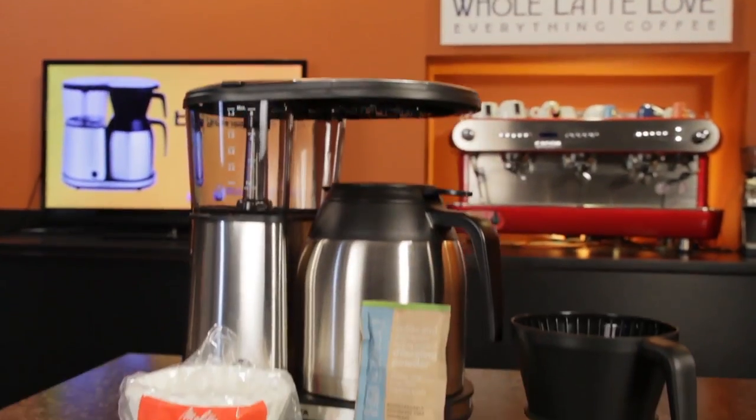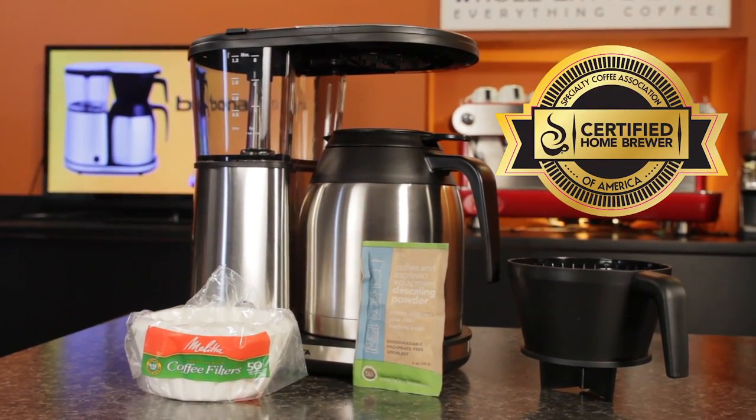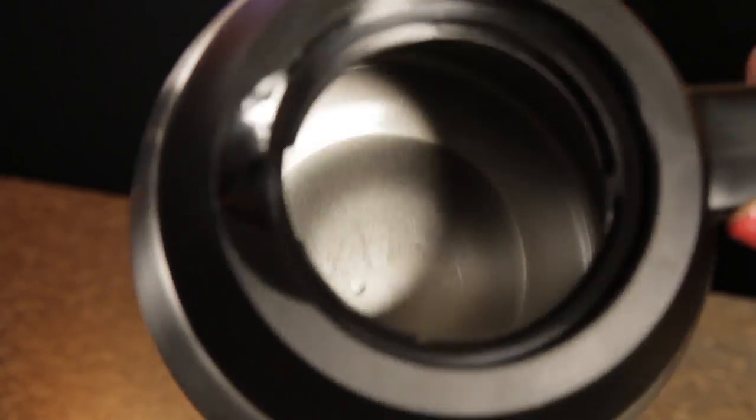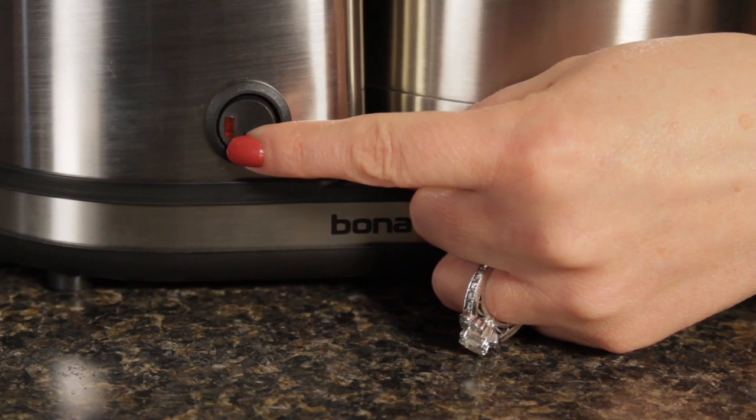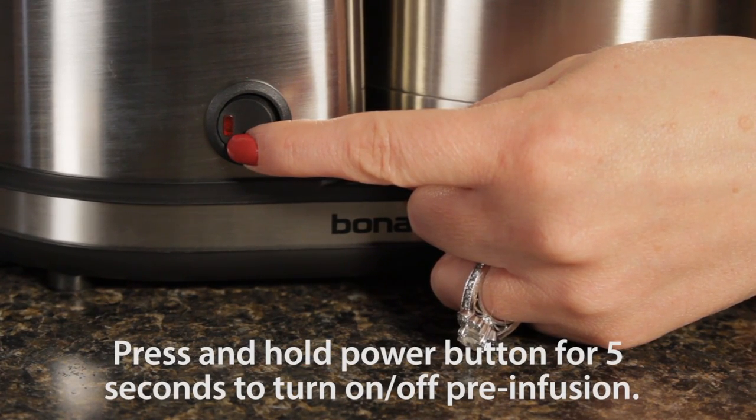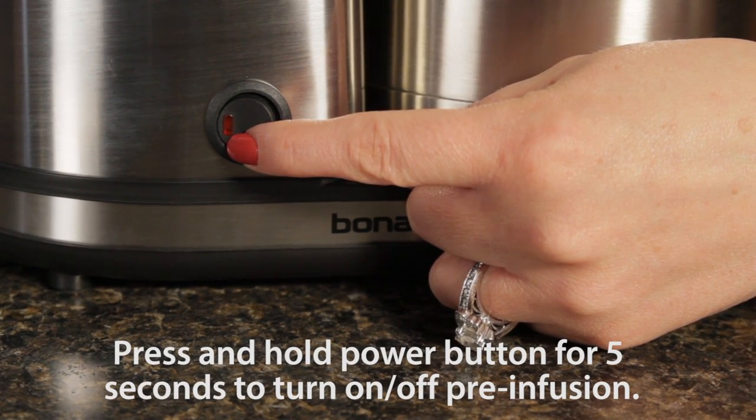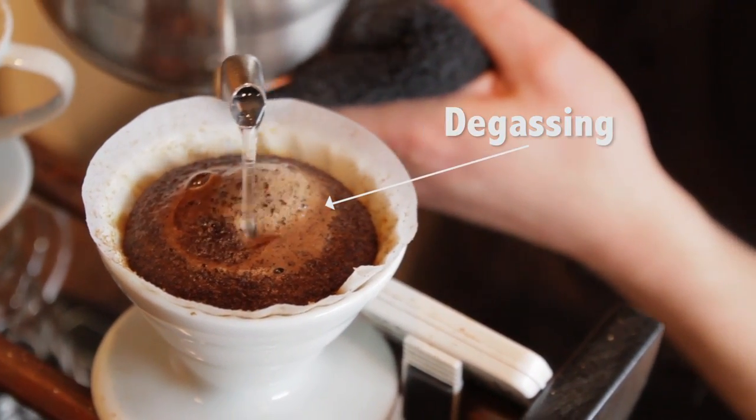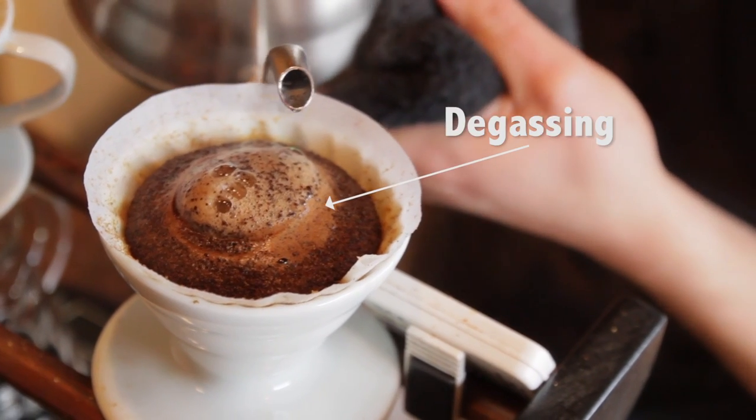It's a slimmed down version of Bonavita's 8 cup brewer which earns certification by the Specialty Coffee Association of America. It has a thermal carafe which keeps coffee hot for hours without cooking it, and it has a pre-infusion mode. If your dad's into fresh roasted fresh ground coffee, pre-infusion lets the coffee bloom and degas. It's a very important step in pulling out the subtle flavors of single origin coffees.